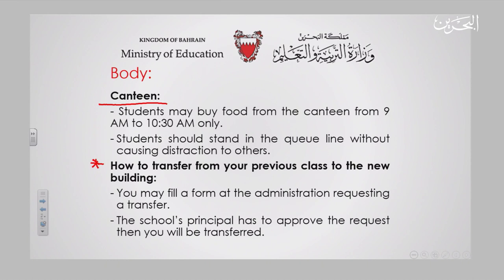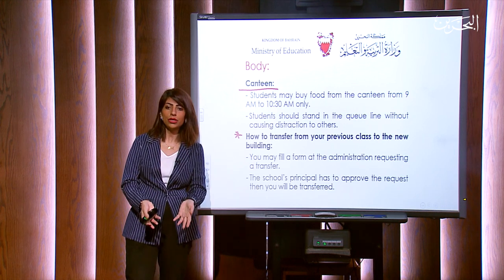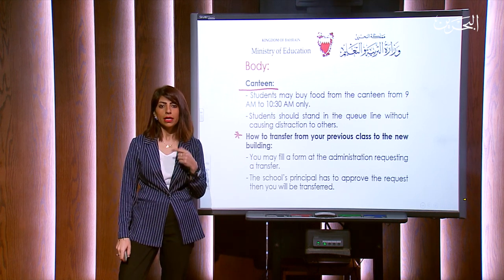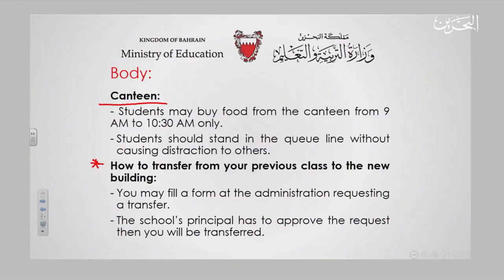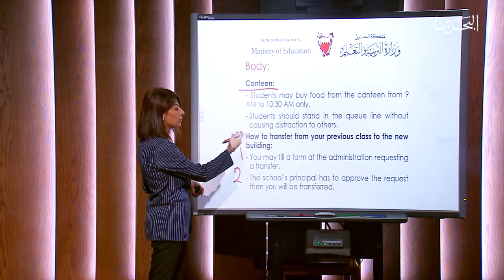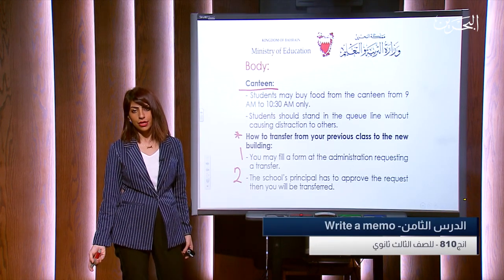The last bold point is how to transfer from your previous class to the new building. If you wish to transfer from the old building to the new one, there are rules to follow. Rule one: you may fill a form at the administration requesting a transfer. Rule two: the school's principal has to approve the request, then you will be transferred. So I'm giving them the instructions on how to transfer to the new building.